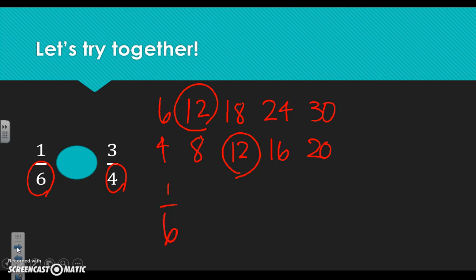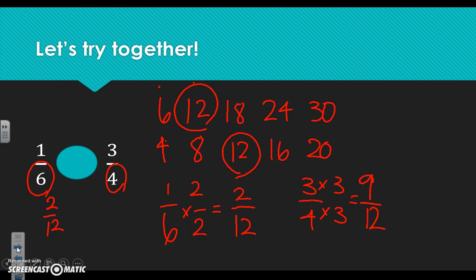We need to figure out our new numerator and denominator. Starting with one sixth: six times what gives me twelve? Six times two is twelve, and one times two is two, so one sixth is the same as two twelfths. Now for three fourths: four times what gives me twelve? Four times three is twelve, and three times three is nine, so three fourths is the same as nine twelfths.